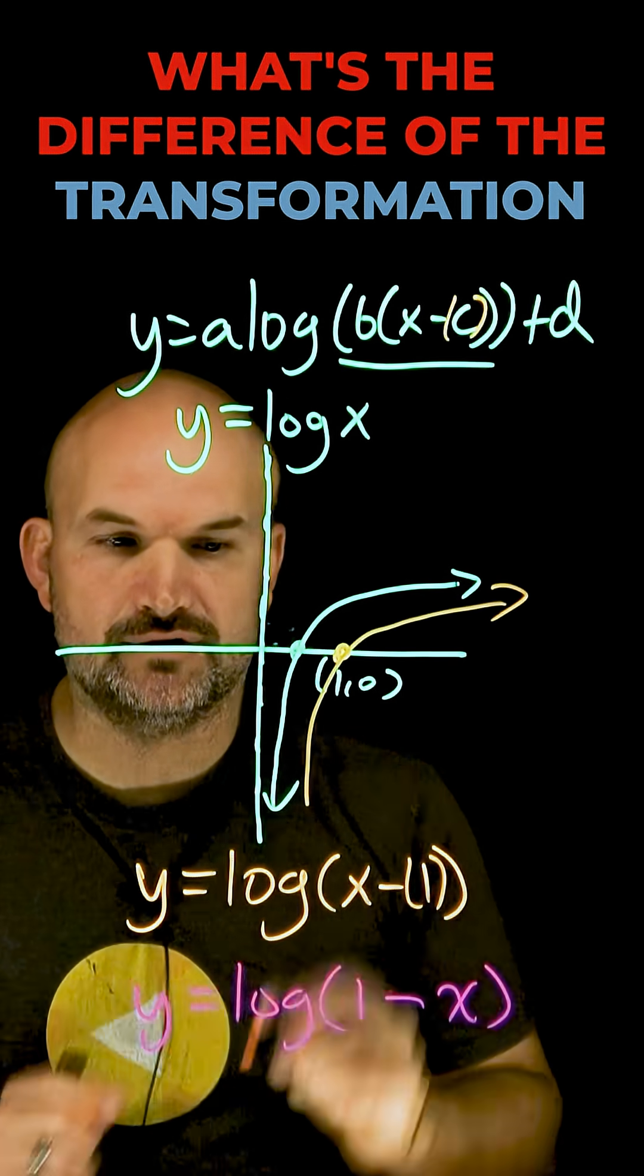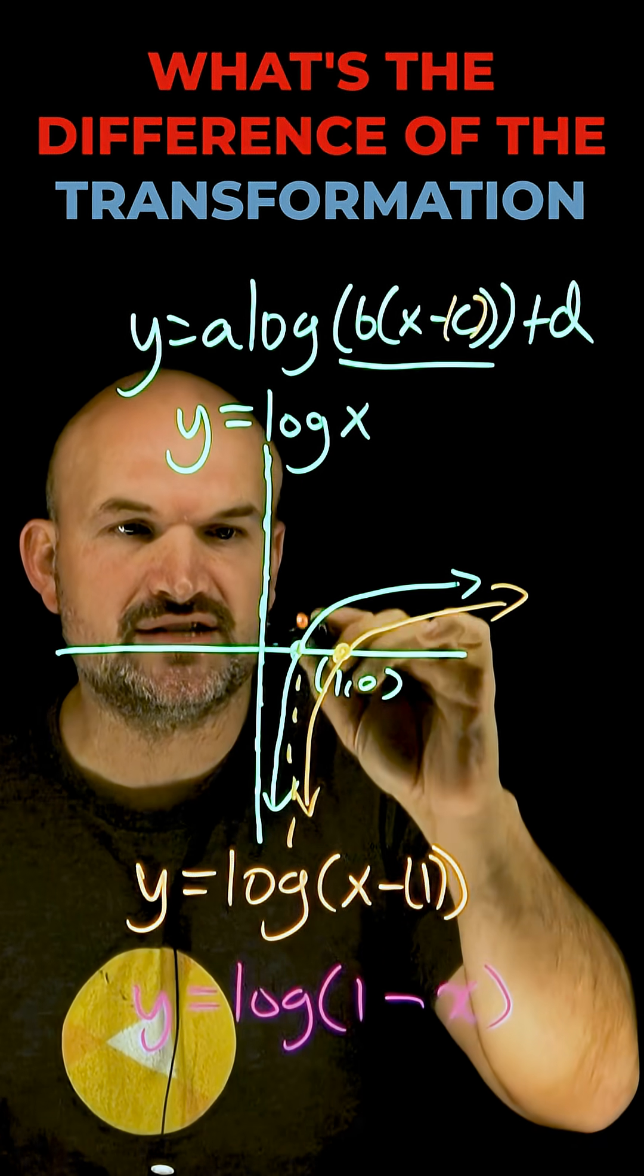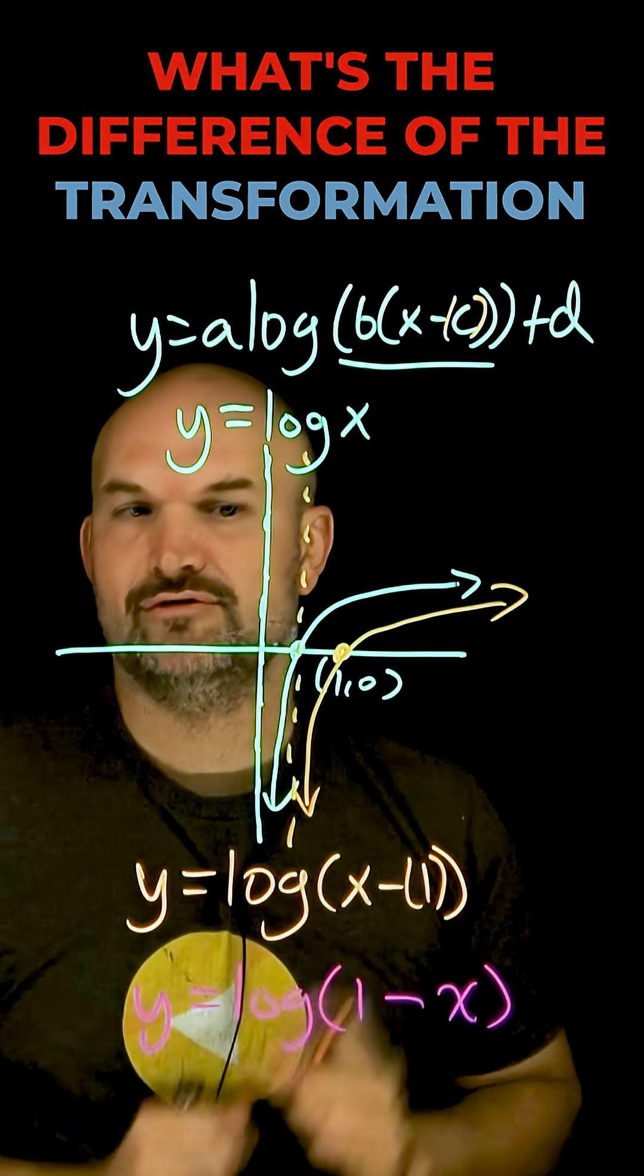Now it's important when you're graphing a logarithm not just to transform my x intercept with my whole graph, but I'm also going to want to transform or shift over my vertical asymptote.